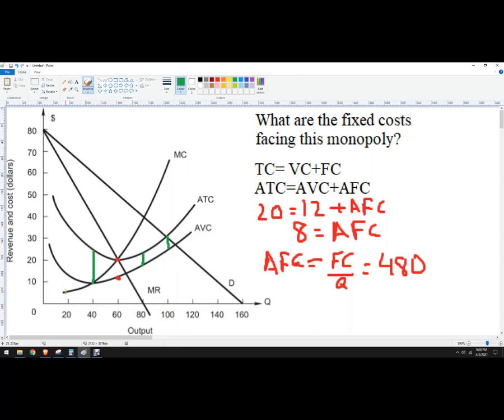And the distance between here and here using 20. Any of those are going to work. And that's how to calculate total fixed cost facing this monopoly.